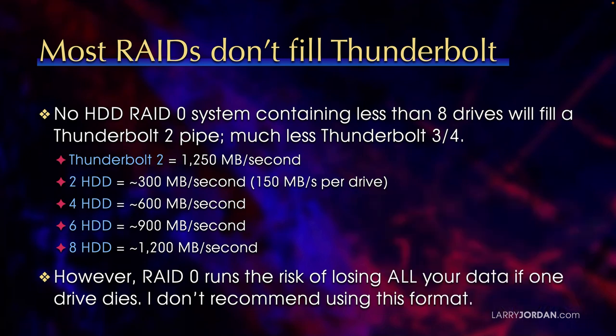If you have four hard drives in your RAID, that's 600 megabytes per second. Six hard drives gives 900 megabytes per second. Eight drives gives 1,200 megabytes per second. Even with eight drives, you can just barely hit the maximum data transfer rate of Thunderbolt 2, and eight drives doesn't begin to fill a Thunderbolt 3 or Thunderbolt 4 pipe.